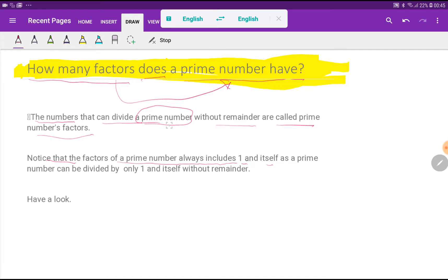Look at here. 3 is a prime number, right? Because 3 is only completely divisible by 1 and itself.